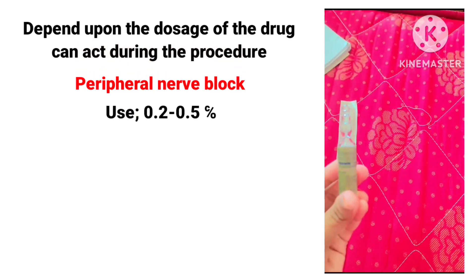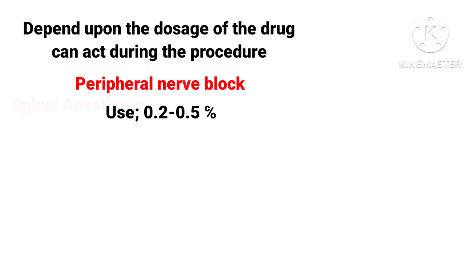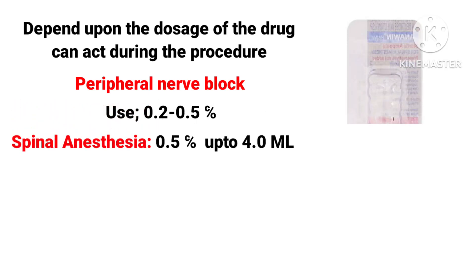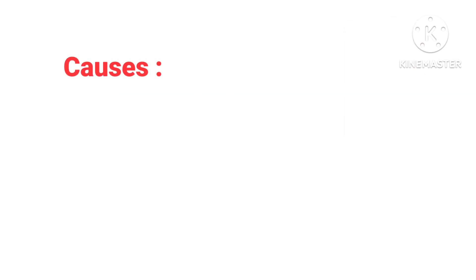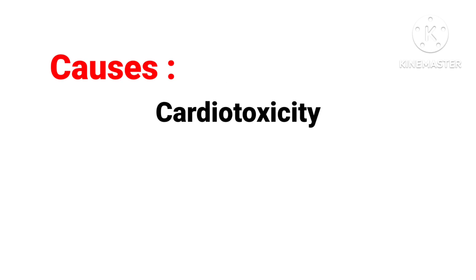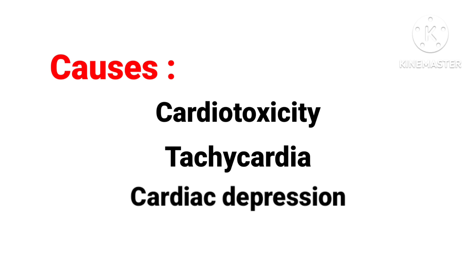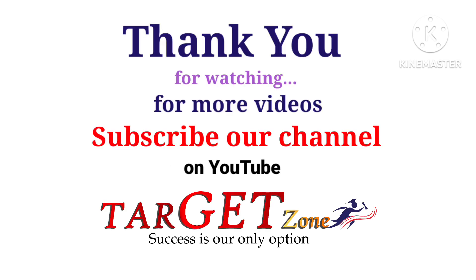Depending on the dose, the drug can act during the procedure. For peripheral nerve block, 0.2 to 0.5 percent can be used. For spinal anesthesia, 0.5 percent up to 4 ml can be used. For epidural anesthesia, 0.25 to 0.5 percent can be used. It can also cause cardiotoxicity, tachycardia, and cardiac depression.